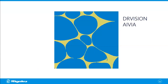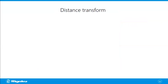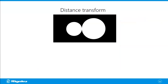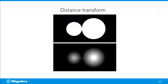To understand this process you need to know two different image processing operations. The first is distance transform. Applied to a binary image — for example, two cells connected — you assign a number to each pixel representing the distance from that pixel to the closest borderline. A pixel close to the borderline gets a small number; a pixel far from the borderline gets a large number. If you do this for the entire image, you get the distance transform of the original binary image.